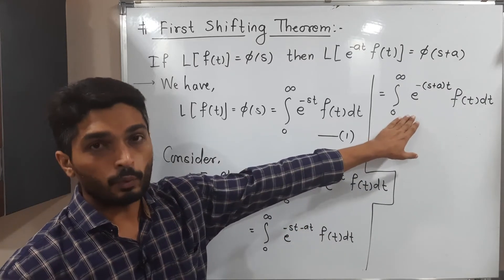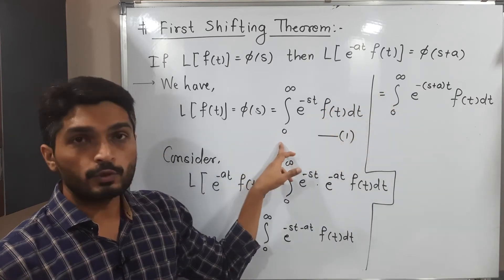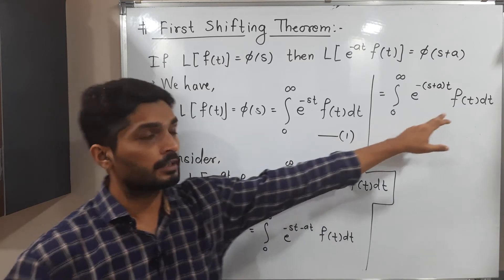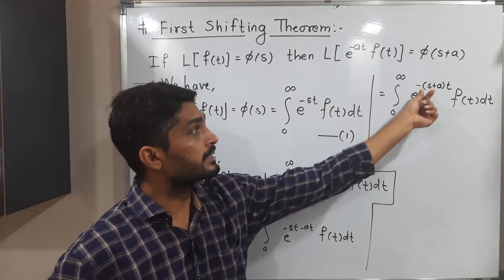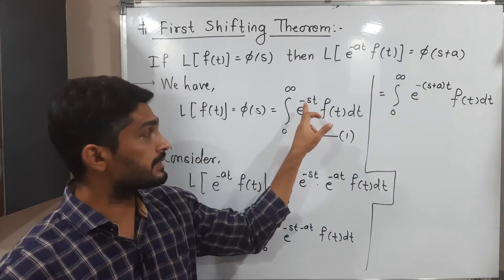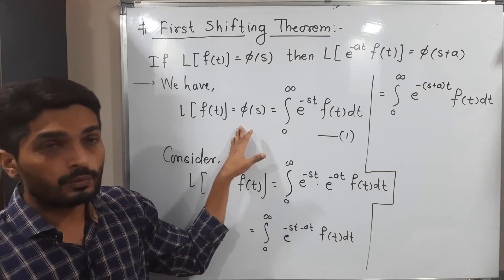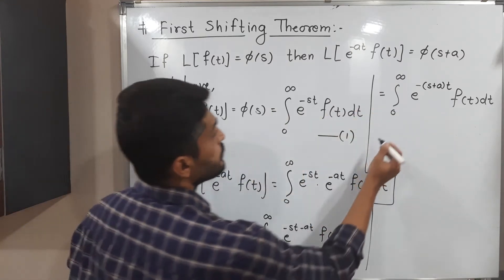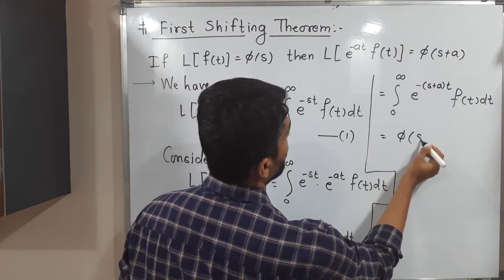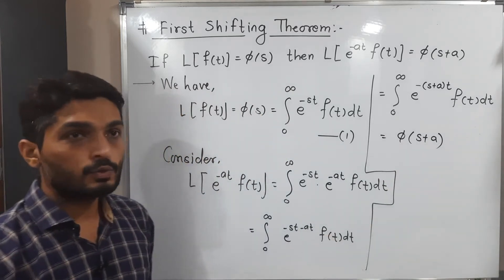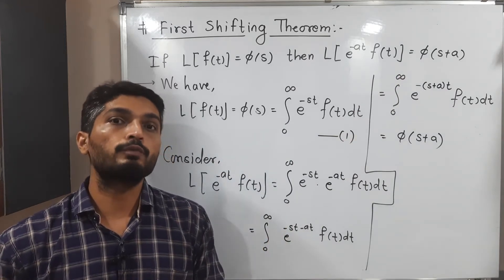Can you tell me what this is? What is the difference between the original definition and this one? There, it's 0 to infinity with f(t) dt; here also 0 to infinity with f(t) dt. The power of e was minus st; now the power is minus(s + a)t. That means at the place of s we have s + a — this is the only difference. The remaining part is the same. So we call it φ(s), and since we replaced s with s + a, this is nothing but φ(s + a). Therefore, Laplace of e raised to minus at times f(t) equals φ(s + a). The proof is complete.